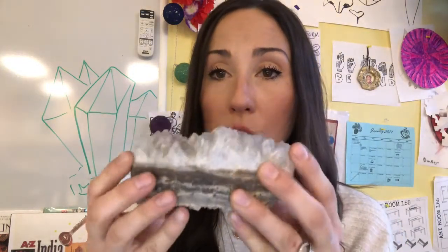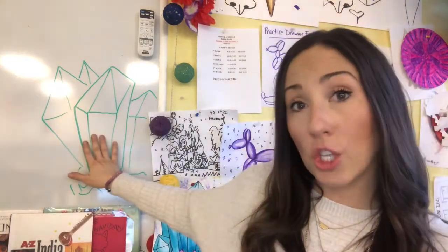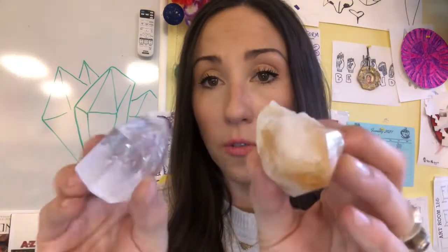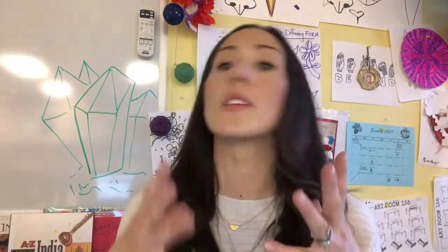When a shape is 3D and it has a top, side, bottom, and back, that's a form. When it's flat like this, that's a shape. So today we're going to talk about how we can take these beautiful crystal forms and try to draw those forms on our paper and make the viewer believe that it's a 3D form.